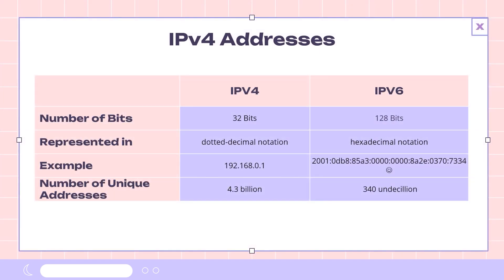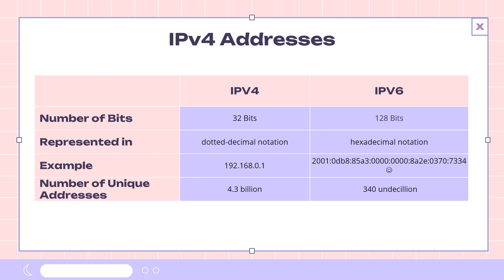Now let's take a closer look at IP addresses. IP, Internet Protocol, is the primary Layer 3 protocol used today. IPv4 is the most widely used version, although IPv6 is gradually gaining traction to accommodate the growing number of devices on the Internet. IPv4 addresses are 32-bit numbers represented in dotted decimal notation, such as 192.168.0.1, allowing for approximately 4.3 billion unique addresses. Due to the rapid growth of the Internet, IPv4 address availability has become limited, so IPv6 was introduced. IPv6 addresses are 128-bit numbers in hexadecimal notation, allowing for approximately 340 undecillion unique addresses.